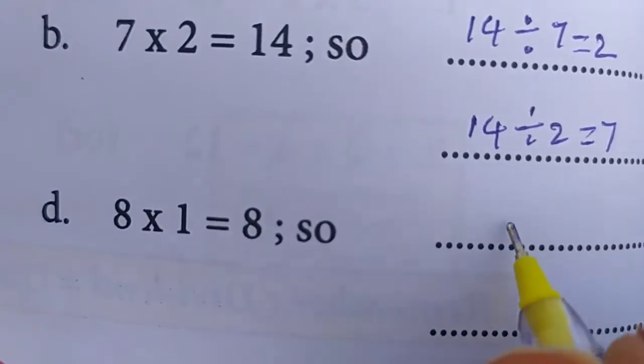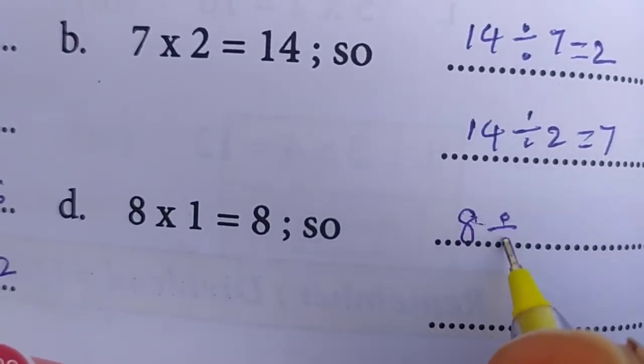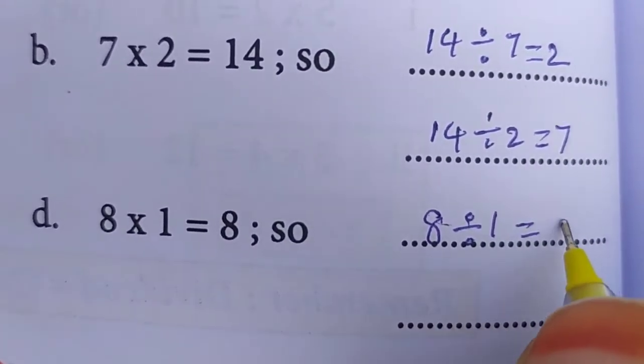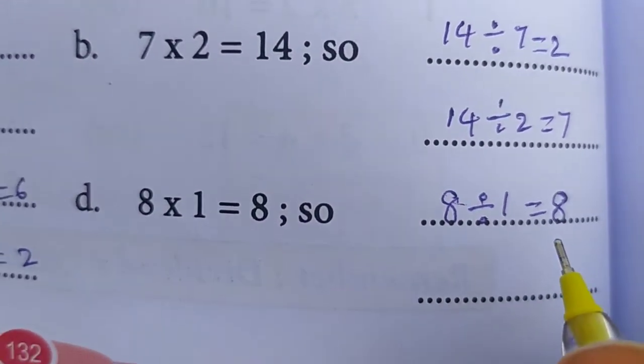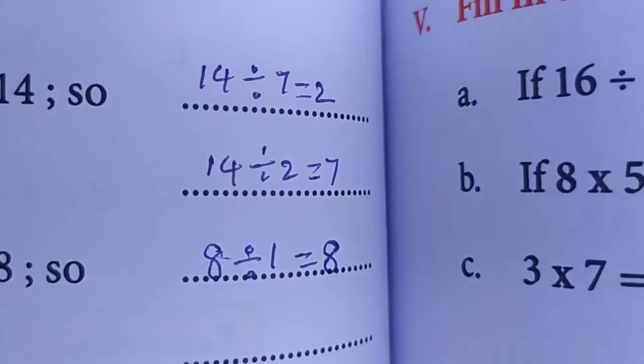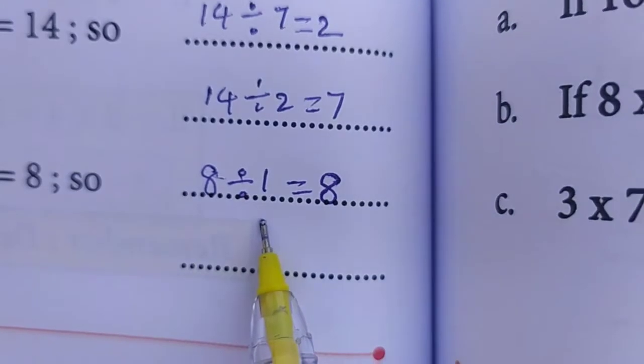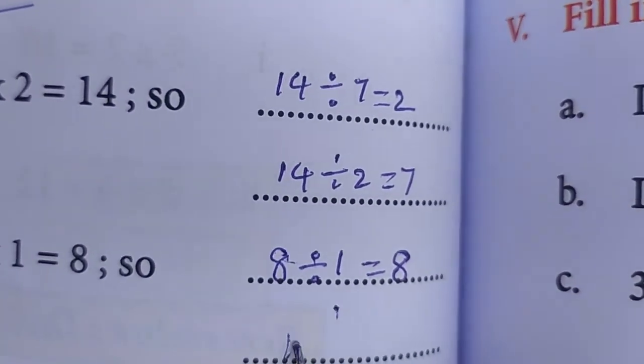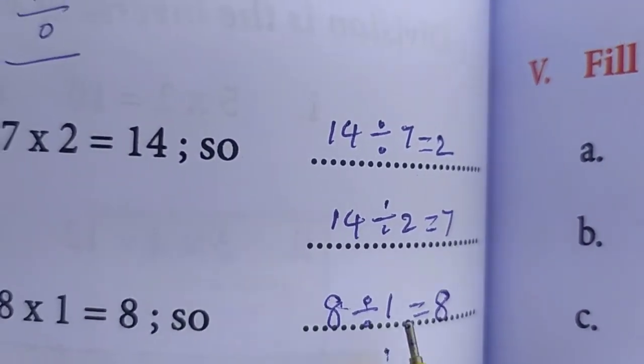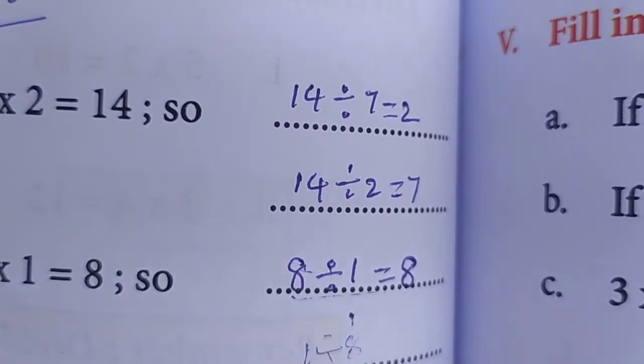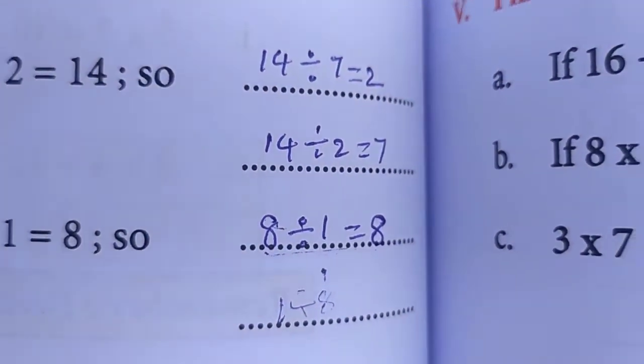8 ones are 8. 8 divided by 1 is equal to 8. Here we can write only 1 multiplication fact. That's why 8 divided by 1 is equal to 8.